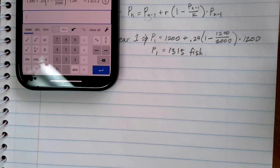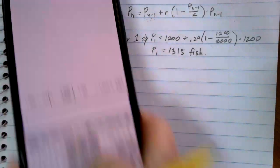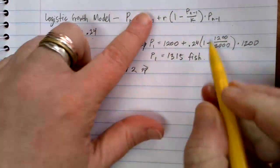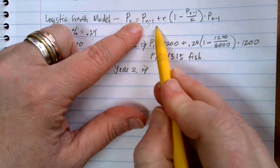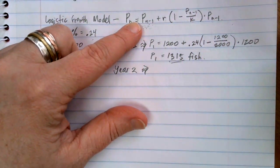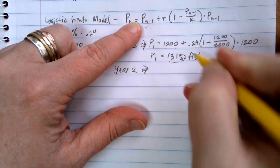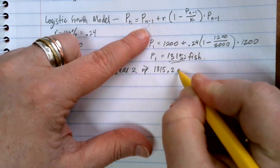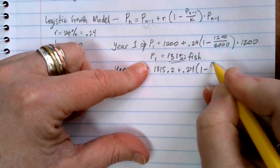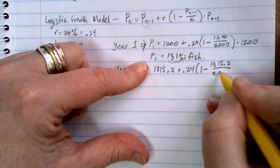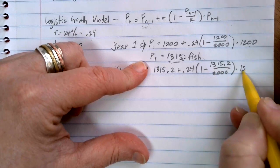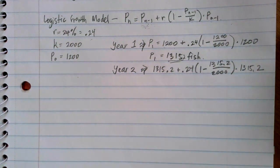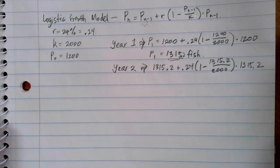Now that I know year one's fish population, I can calculate year two's fish population. So let's see how that works. If I want to do year two, my formula is the same. But this time, every time I see the P_(n-1), I'm now going to use the 1,315. I guess it was a 0.2 instead. So 1,315.2 plus 0.24 times one minus 1,315.2 for the second time over 2,000 times by 1,315.2 for the third time. Again, I've got an equation all nicely written out, and I can type that into Desmos.